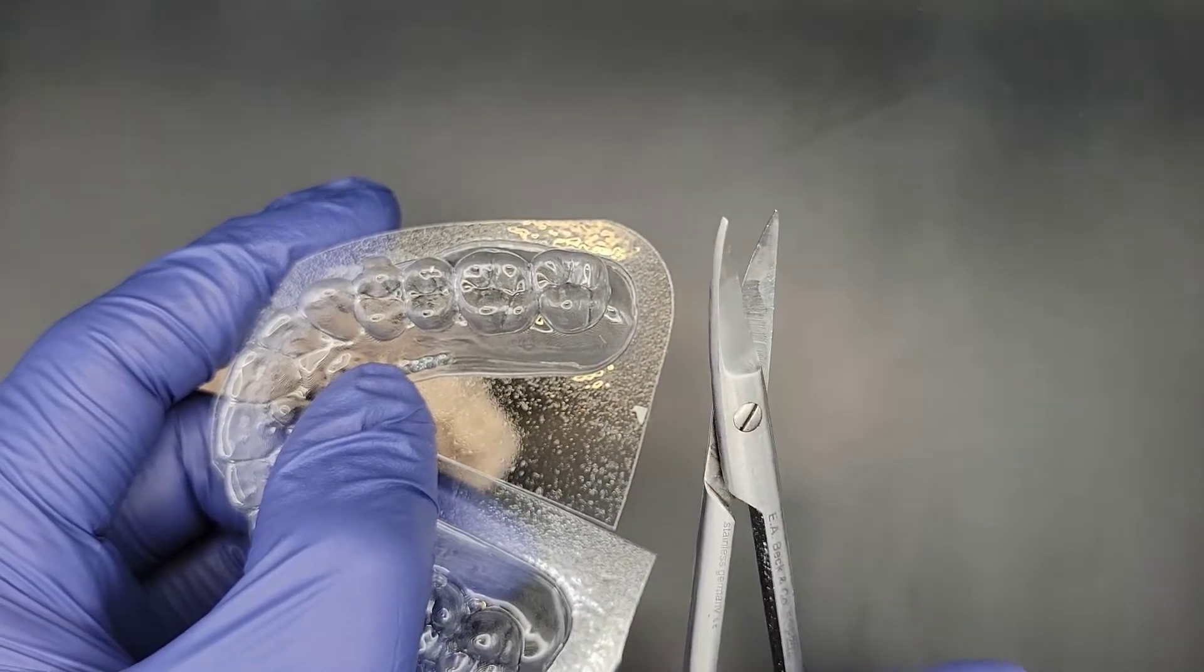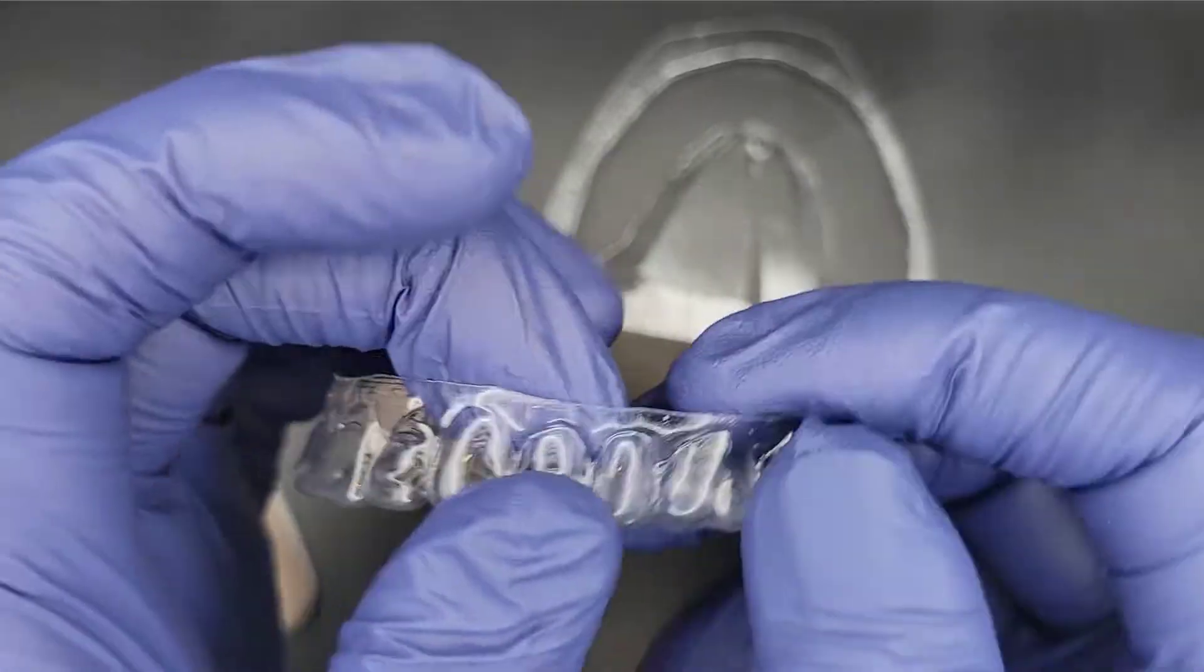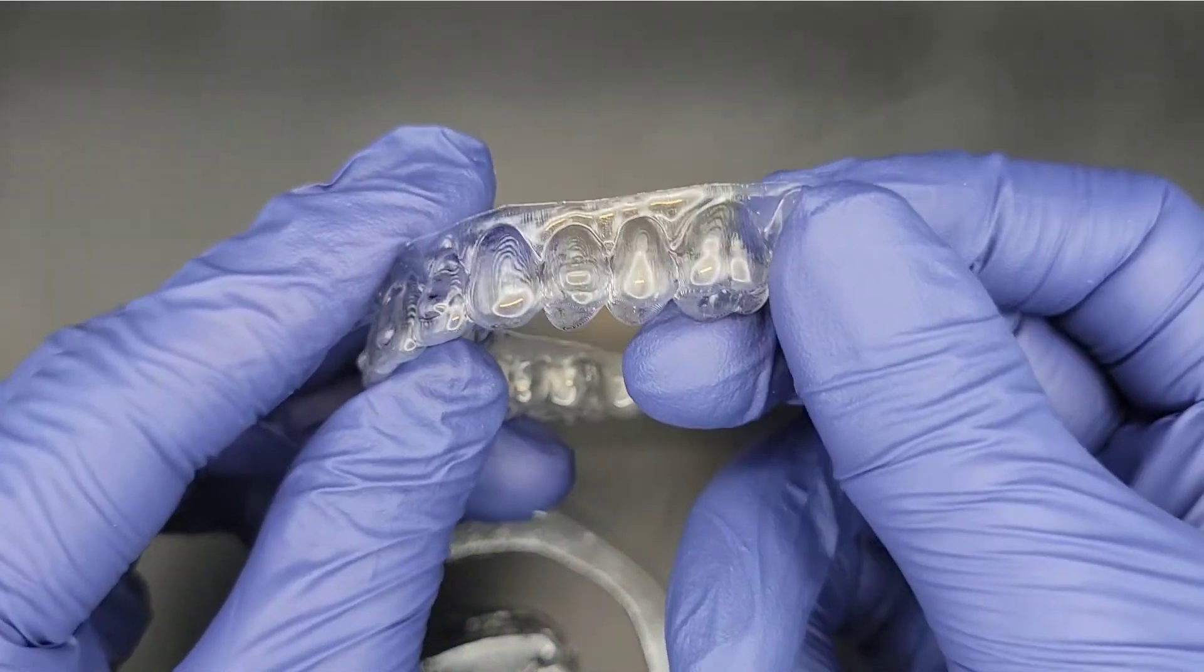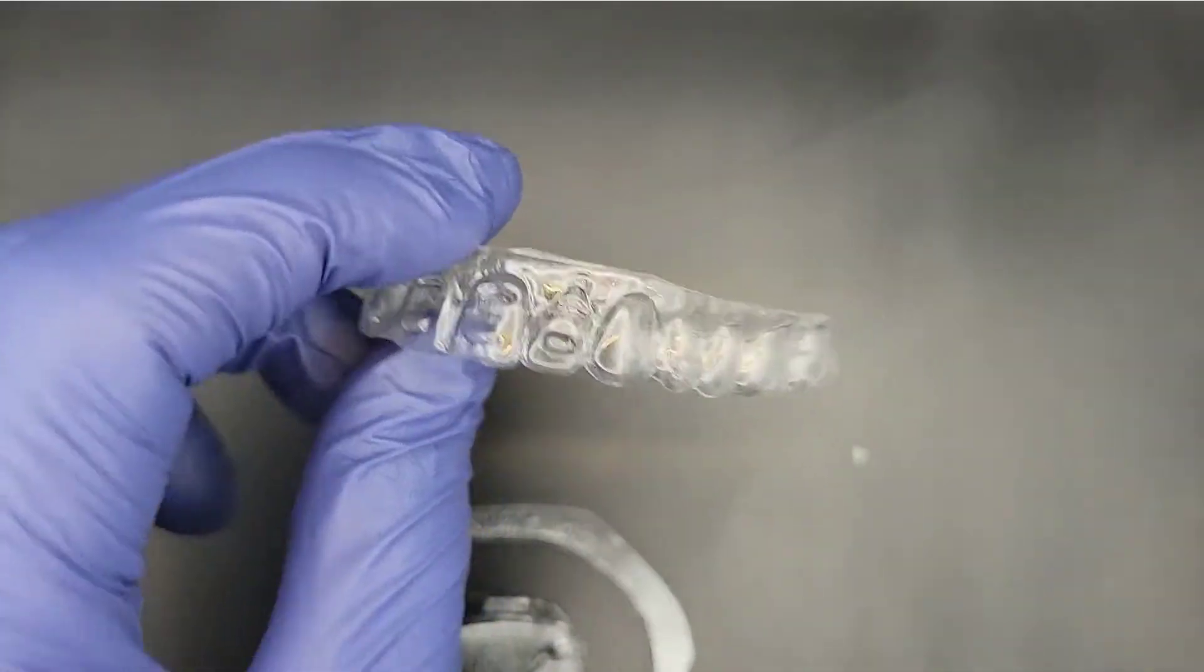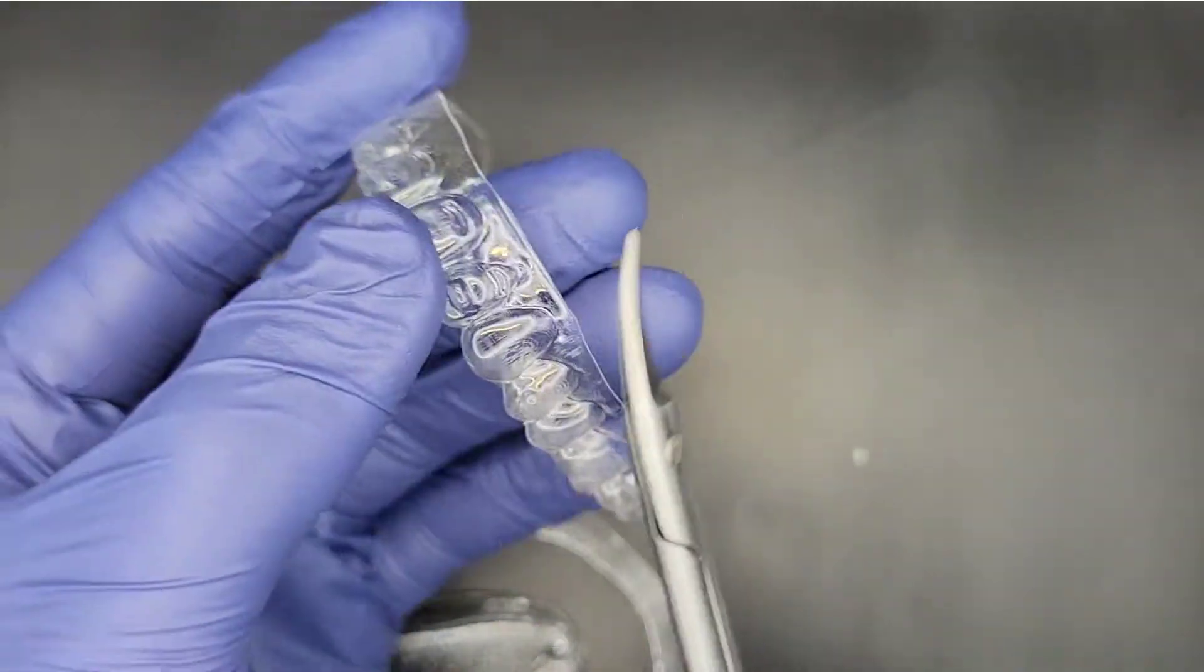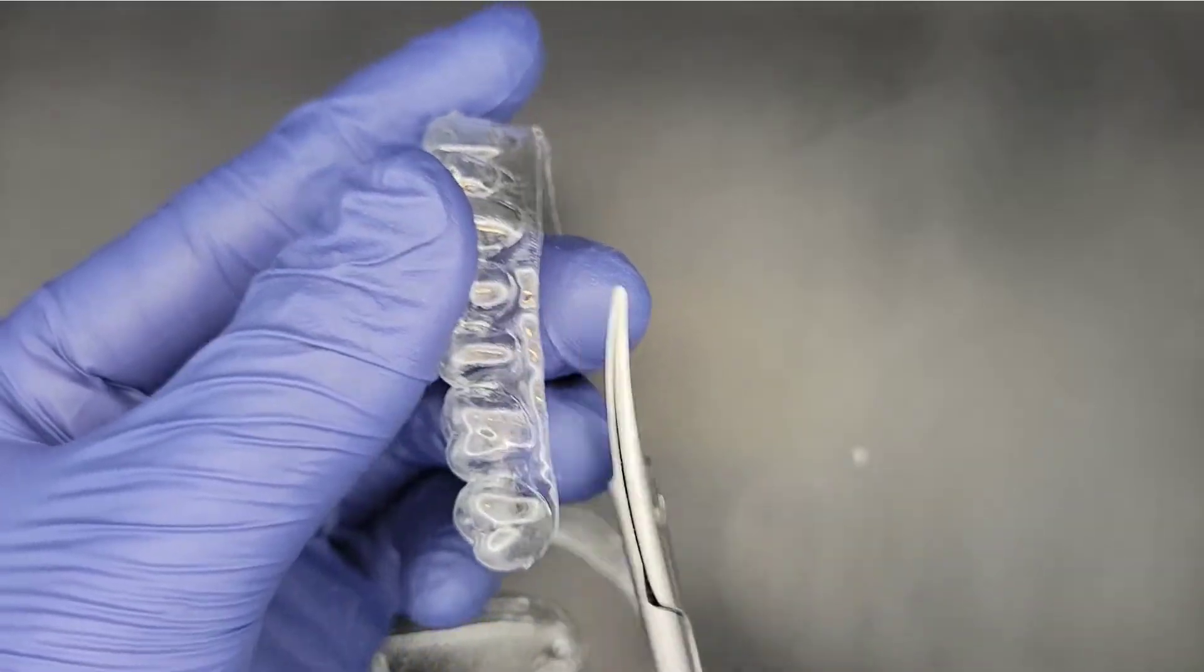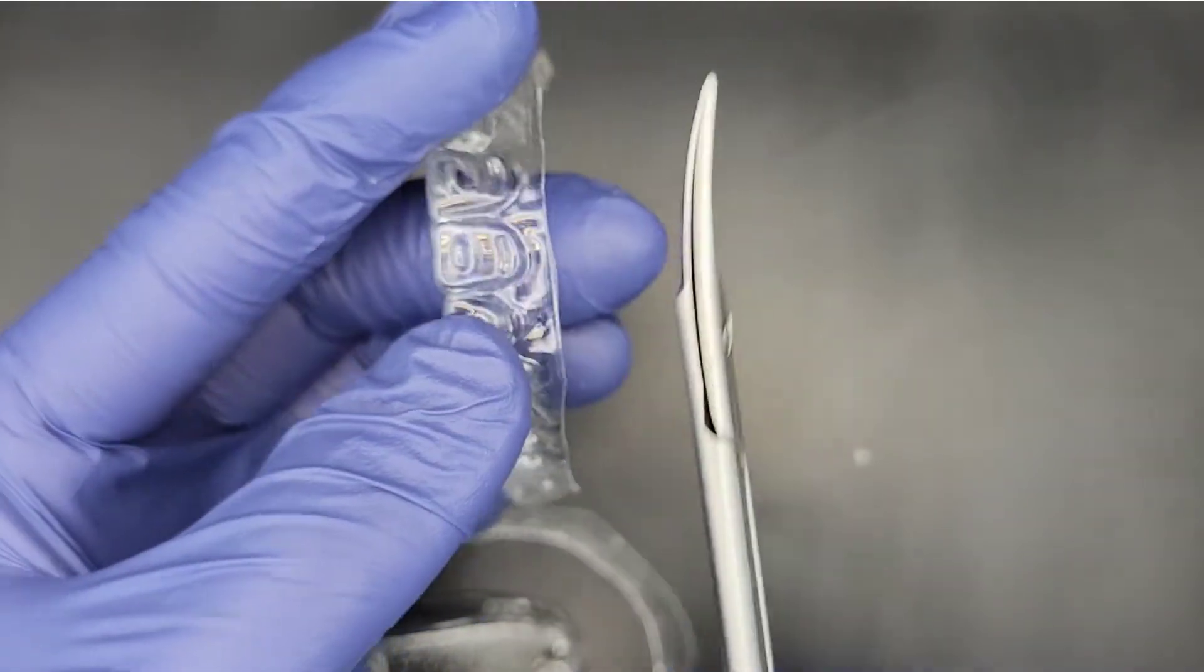Next, I'll show you what it looks like when you trim closing your scissors completely. As you can see, closing your scissors completely creates a jagged, serrated edge on the aligner. This will be very uncomfortable for the patient to wear.